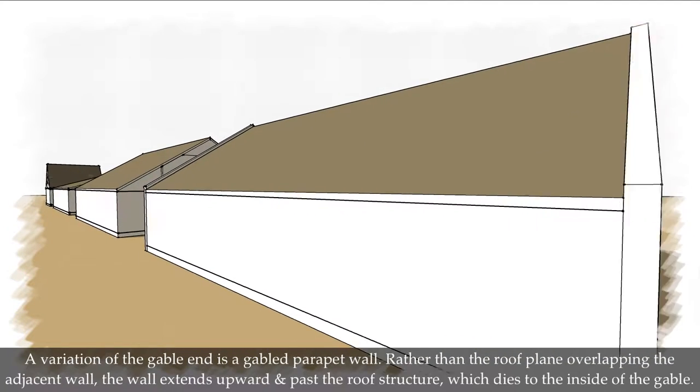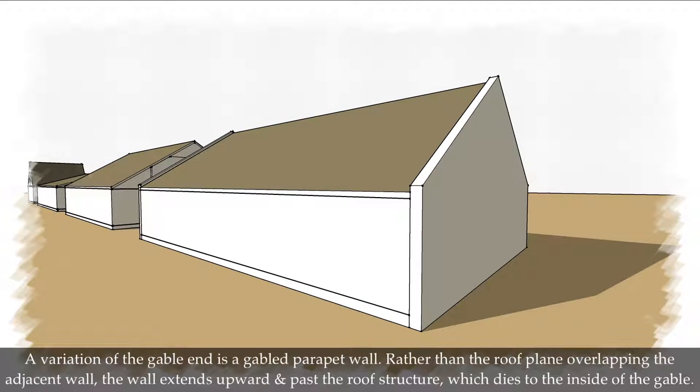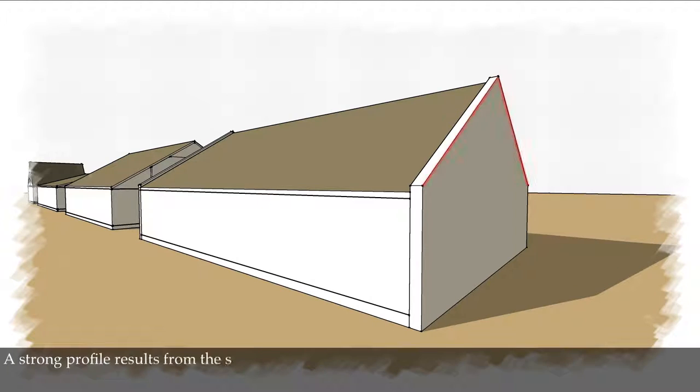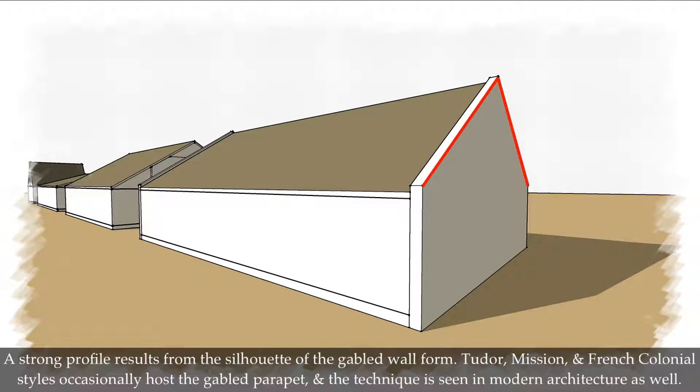A variation of the gable end is a gable parapet wall. Rather than the roof plane overlapping the adjacent wall, the wall extends upward and past the roof structure, which dies to the inside of the gable. A strong profile results from the silhouette of the gabled wall form. Tudor, Mission, and French colonial styles occasionally host the gabled parapet, and the technique is seen in modern architecture as well.